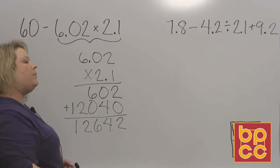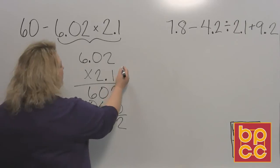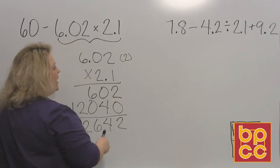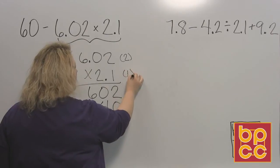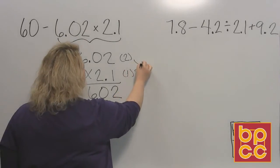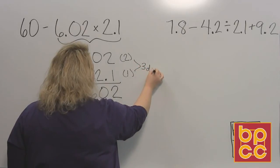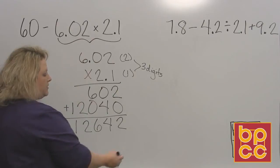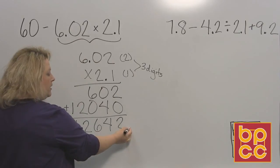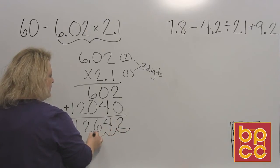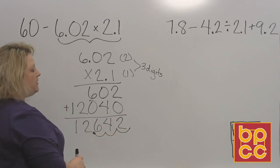Now I'm going to worry about my decimal. In my first number, I have two digits behind the decimal. In the second number, I have one digit behind the decimal. So I have a total of three digits that need decimal places. So I start here at the end of my number and I move to the left one, two, three places. Okay? And that's where my decimal ends up.